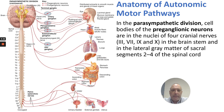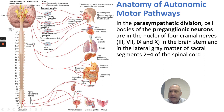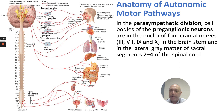In the parasympathetic division, the cell bodies of preganglionic neurons are in the nuclei of four cranial nerves — cranial nerves 3, 7, 9, and 10 — in the brainstem. We can see the terminal ganglia: ciliary, pterygopalatine, submandibular, and otic ganglion, with their various effectors. Remember, parasympathetic is rest or digest, so the activities it supports are to not support fight or flight but to support more resting and digesting.